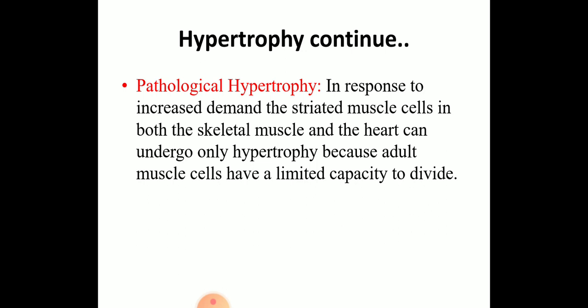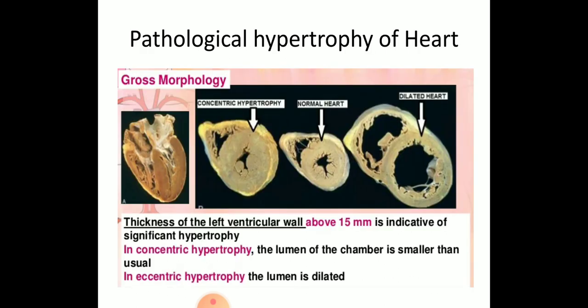Hypertrophy may also be pathological, usually in response to increased demand. The striated muscle in both skeletal muscle and heart can undergo only hypertrophy, as adult muscles have a limited capacity to divide. In this figure, you can see a normal heart, and on the left side a concentric hypertrophied heart, and on the right side a dilated heart. In the heart, the stimulus for hypertrophy is usually chronic hemodynamic overload resulting from hypertension — which causes concentric hypertrophy — or a faulty valve, which may cause a dilated heart. In both tissue types, muscle cells synthesize more protein and more myofilaments, which increases the force each myocyte can generate and thus increases strength and work capacity.